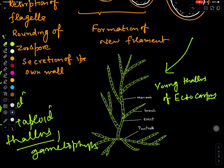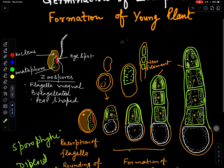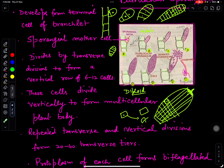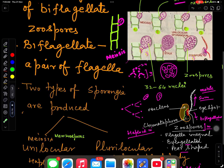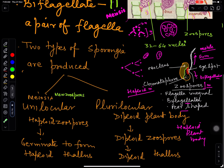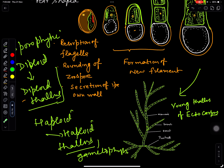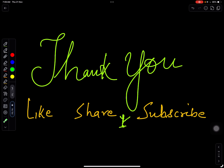The developing thallus will also develop branches — this is its prostrate system and this is its erect system. This is how reproduction takes place in Ectocarpus by the formation of zoospores. Asexual reproduction occurs by the formation of zoospores, which are biflagellate in nature. Two types of sporangia are produced: unilocular sporangia produce haploid zoospores that germinate to form a haploid thallus, and plurilocular sporangia produce diploid zoospores that germinate to form a diploid thallus.